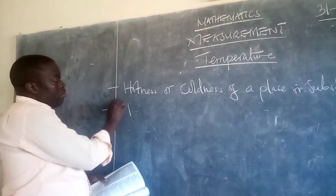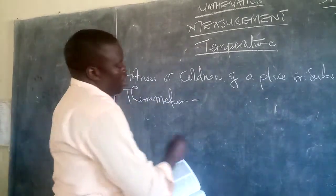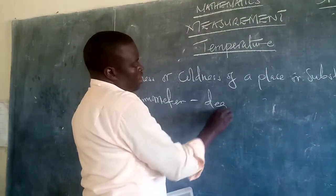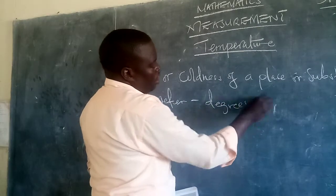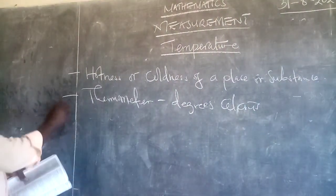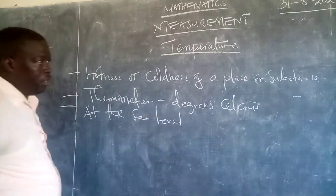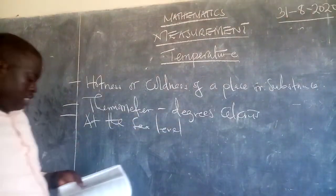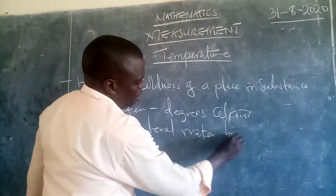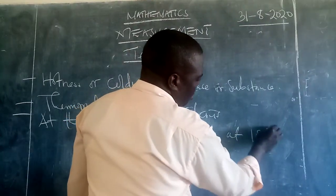We use a thermometer and the units are degrees Celsius. At the sea level — that is around the coast — water boils at 100 degrees Celsius.